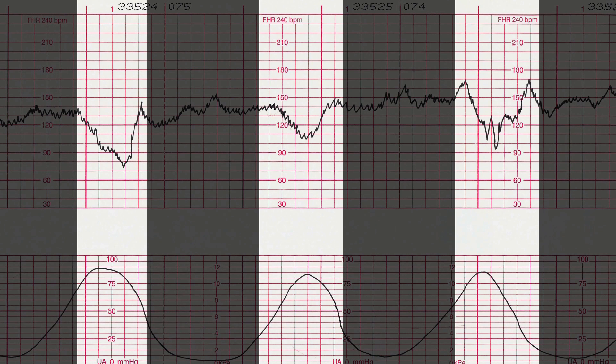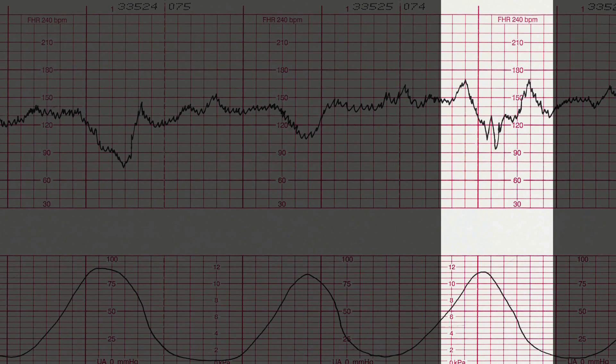Variable decelerations will oftentimes have shoulders around the deceleration, which means the heart rate will accelerate before it drops, and then it accelerates again before it comes back to the baseline. The reason for this is because of the physiology of the umbilical cord.